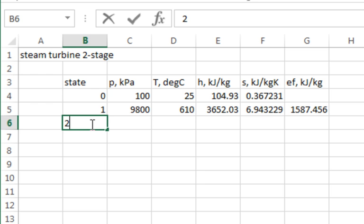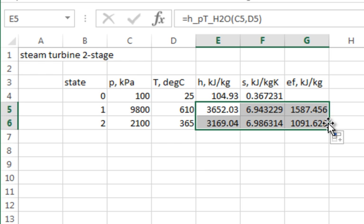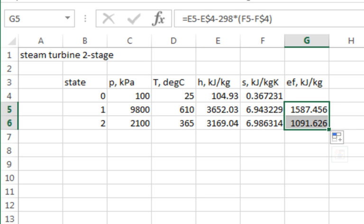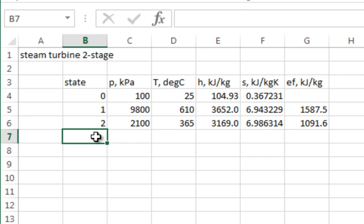Let's go to state 2. What do we know about state 2? It was 2100 kilopascal. And what was the temperature? 365. Could I just grab these three cells, get the lower box right there, bring it down? Do those values look reasonable? They're the same values. I clean this up a little bit, come up here and move that decimal over to clean it up. Likewise right there.